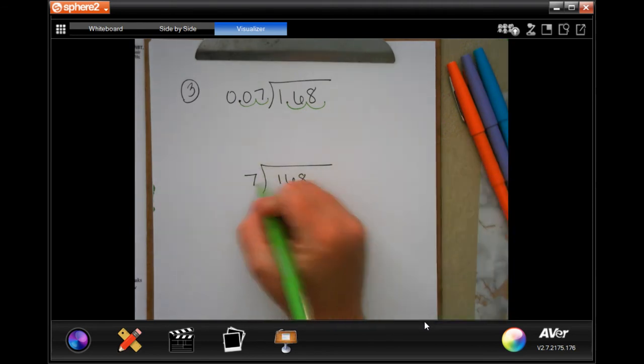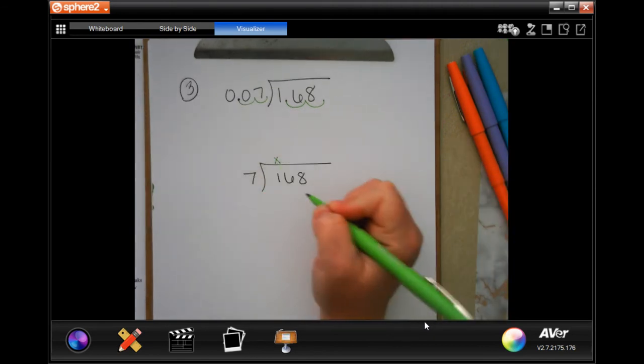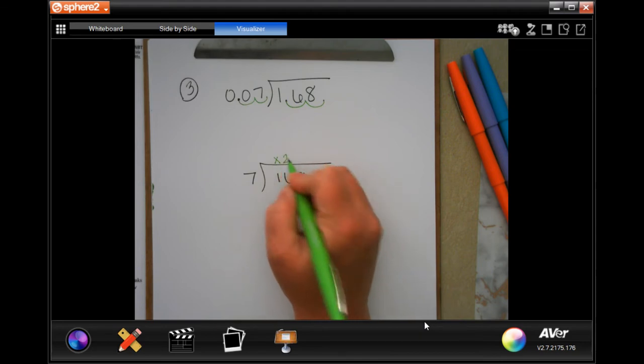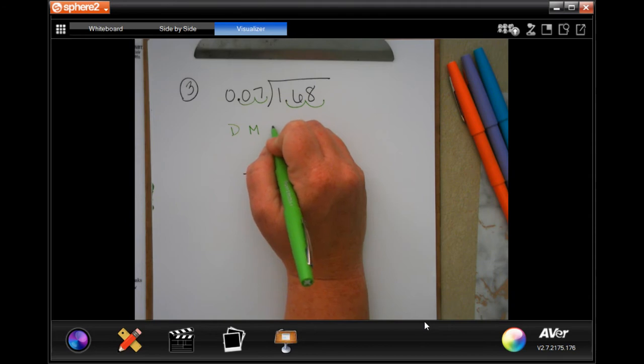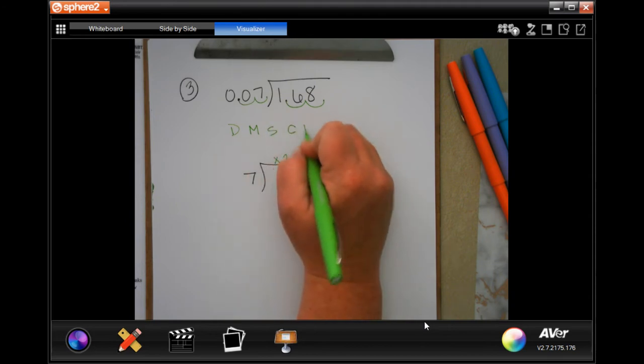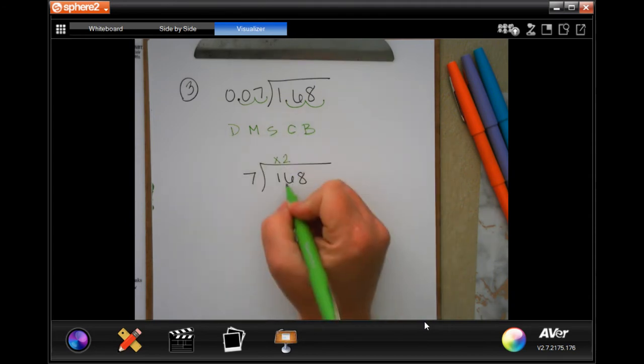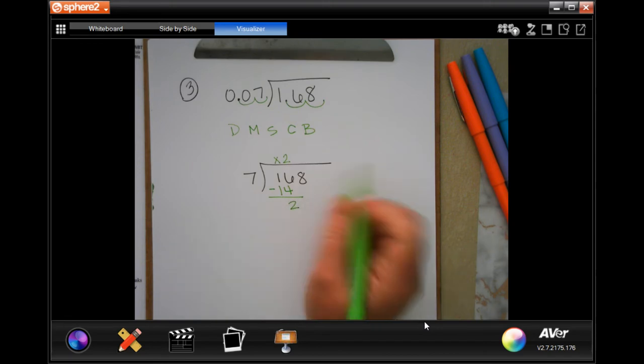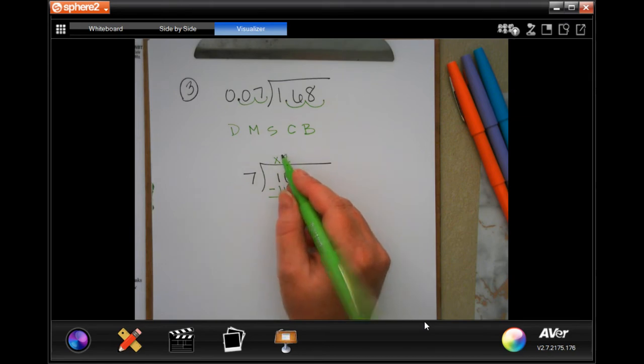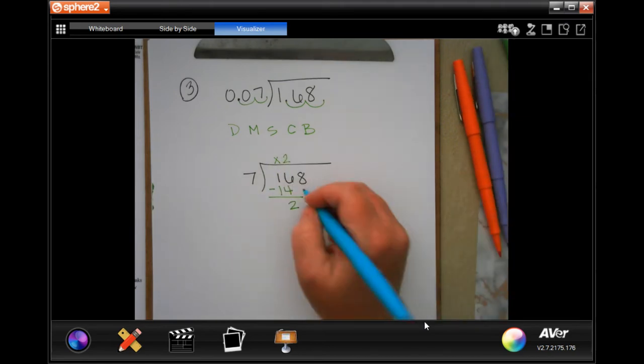So seven's not going to go into one. It will go into 16, two times, two times seven. So I did my division two times, two times seven, 14. That's my multiplication. I'm going to subtract. I get two. Checking just means checking that two is smaller than seven because otherwise that one needs to move up to a three. So now two is smaller than seven. I can bring down my eight.